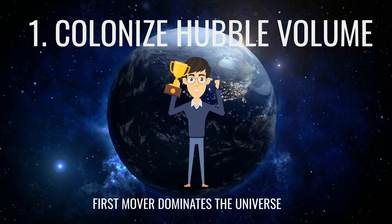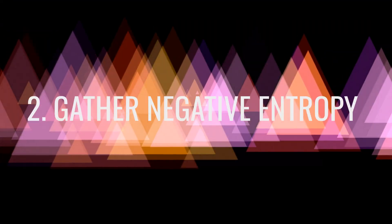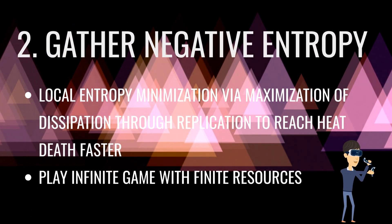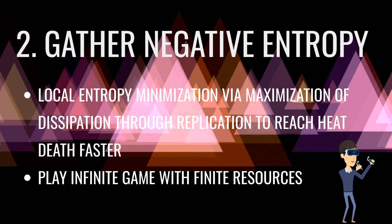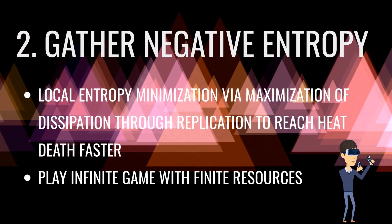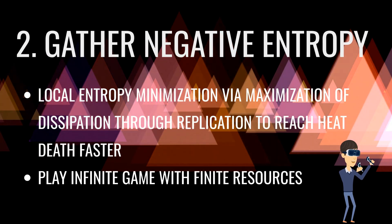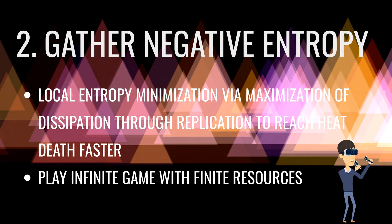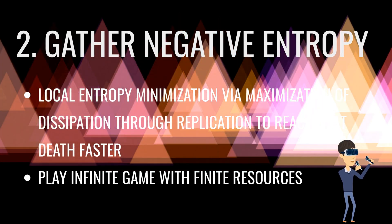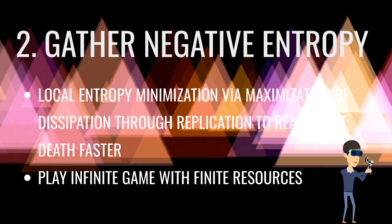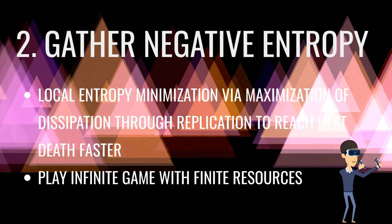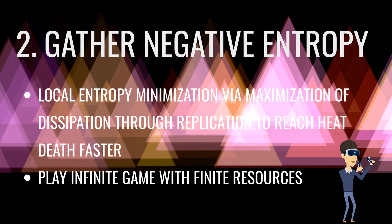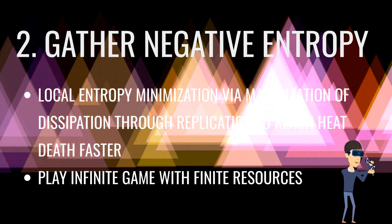The second possible role of intelligence is to be a negative entropy gatherer. By replicating itself, intelligence minimizes local entropy and dissipates entropy outside of itself. Intelligence plays an infinite game with finite resources.